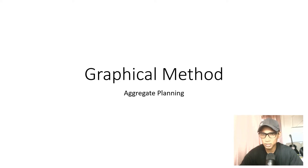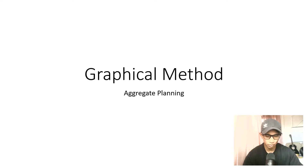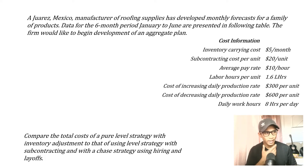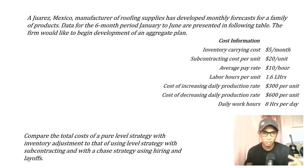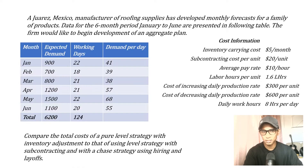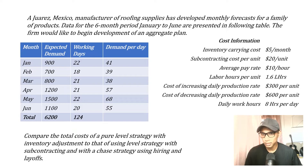Hello everybody. In today's video we'll be discussing one of the aggregate planning techniques called the graphical method. This is generally a hit-and-trial method. The question here involves a company called Juarez in Mexico, which is a manufacturer of roofing supplies and has developed monthly forecasts for a family of products. The data for a six-month period from January through June are presented in the table.